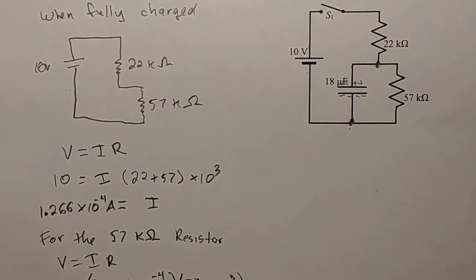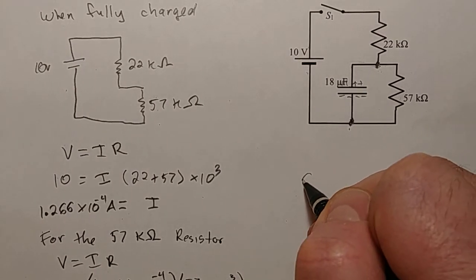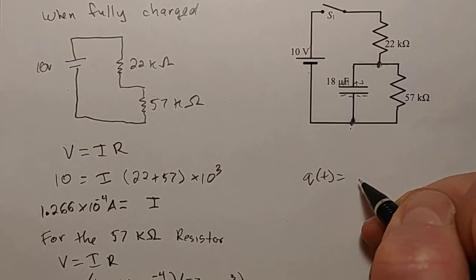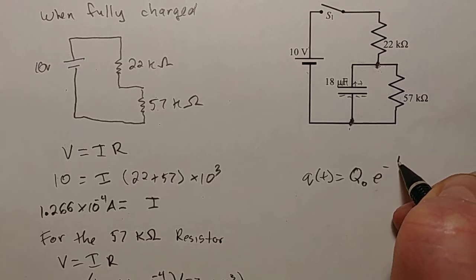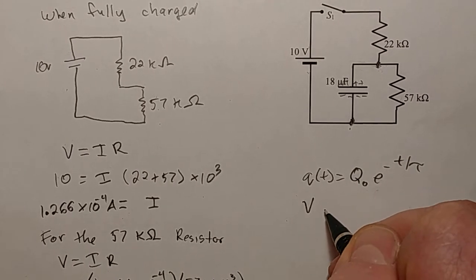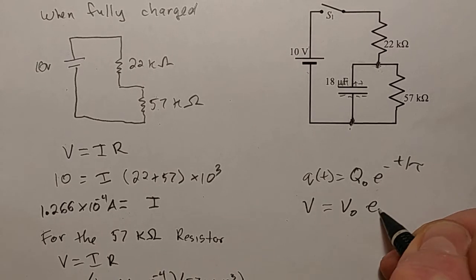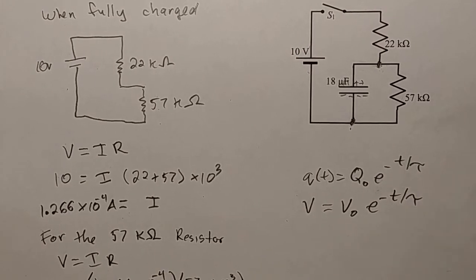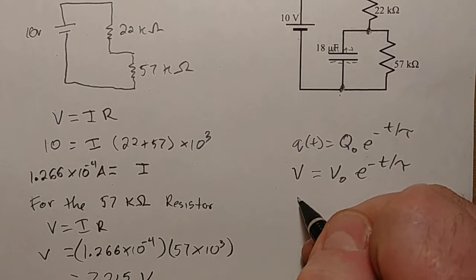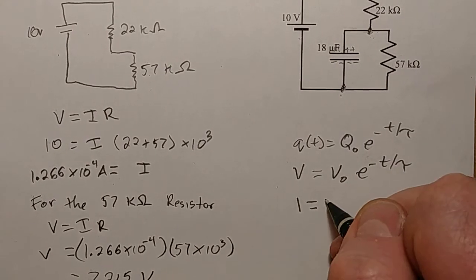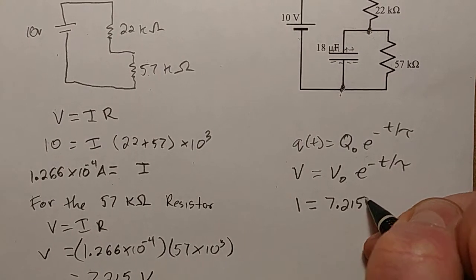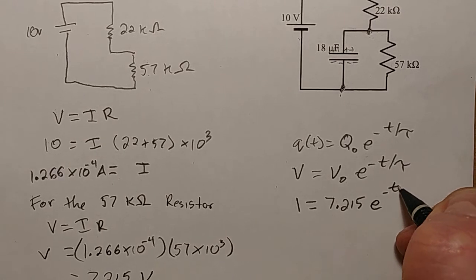So the question asks, how long does it take for the voltage of the capacitor to drop to 1 volt? Well, this is discharging because the capacitor was charged and now it's discharging. So we can use the idea that Q of T when discharging is Q0 e to the negative T over tau, except I want to use the voltage version: V equals V0 e to the negative T over tau. So we want the voltage to be 1 and we know the voltage at the beginning is 7.215 e to the negative T over tau.